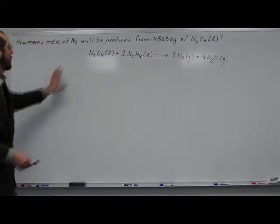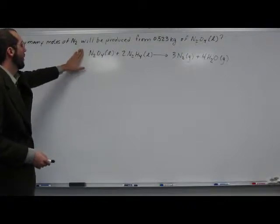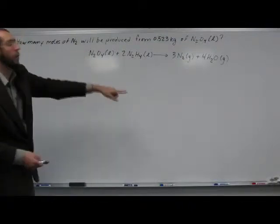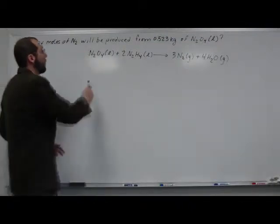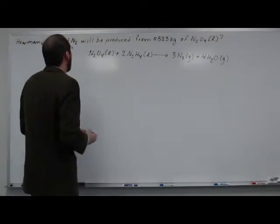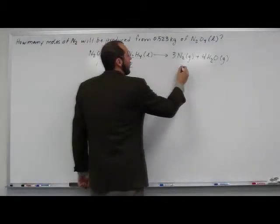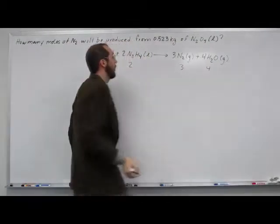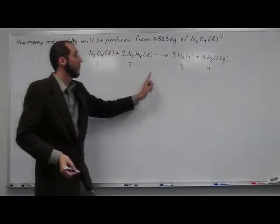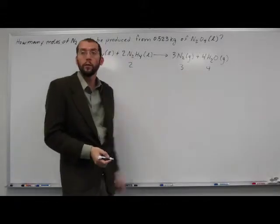So we've got this reaction equation which tells us, gives us the ratios of the different reactants to products. Of course, we've got a 1 to 2 to 3 to 4 ratio here. So 1 equivalence to 2 equivalence goes to 3 equivalence to 4 equivalence.